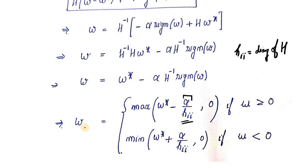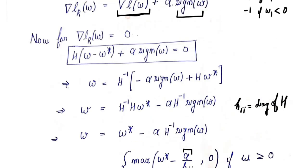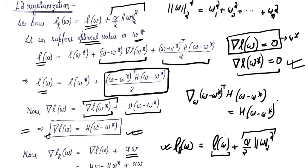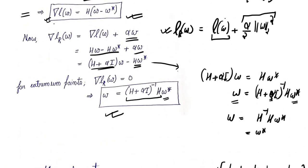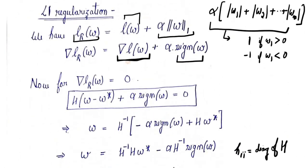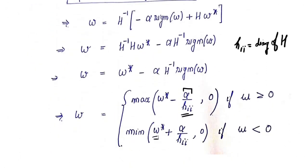Here H_ii is the i-th diagonal value of the Hessian H, alpha is the regularization parameter, and W* is the optimal value obtained. So we discussed both L1 and L2 regularization — L2's impact on W and similarly L1's impact on W. Now we will take a small numerical example to understand how it works.